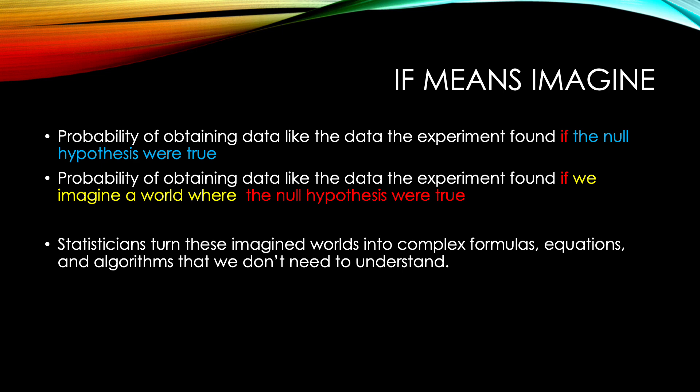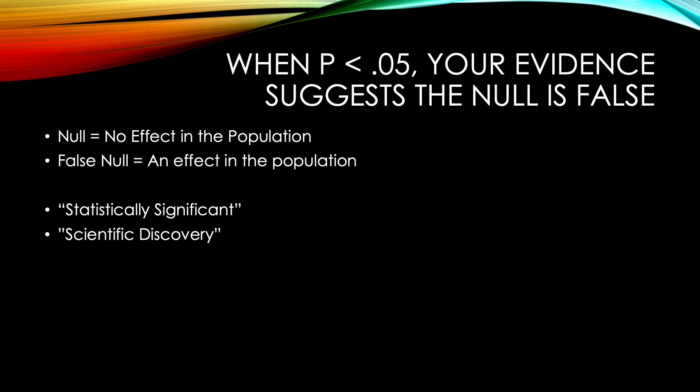When p is less than 0.05, our data don't fit this imaginary world where the independent variable has no effect on the dependent variable in the population. When your p-value is less than 0.05, your evidence suggests the null is false. The null is no effect in the population; a false null means there is an effect in the population. When p is less than 0.05, you've found a statistically significant effect — a scientific discovery.